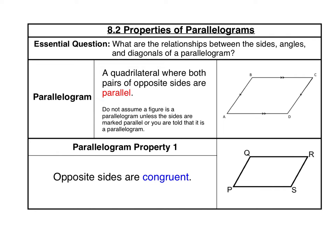Let's start by defining a parallelogram. A parallelogram is a quadrilateral where both pairs of opposite sides are parallel. Parallel lines are marked with arrows, so you can see in this diagram that side AB is parallel to side CD because they're marked with one arrow each, and then the second pair of parallel sides is marked with two arrows, so that side BC is parallel to side AD.